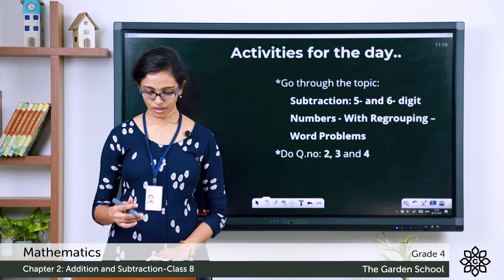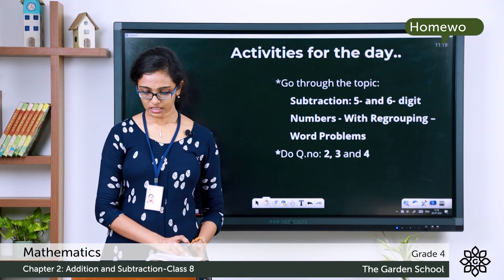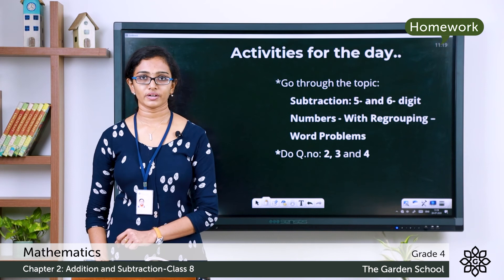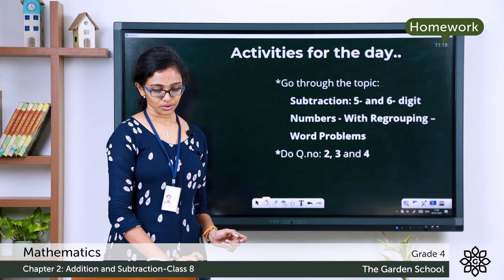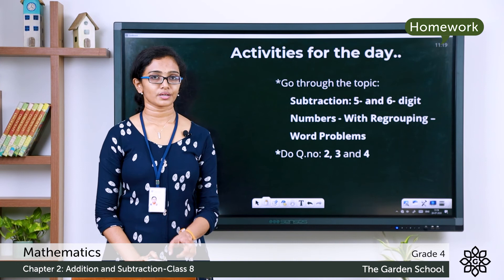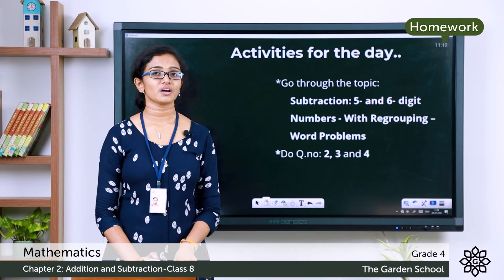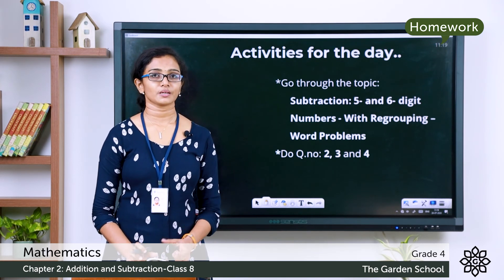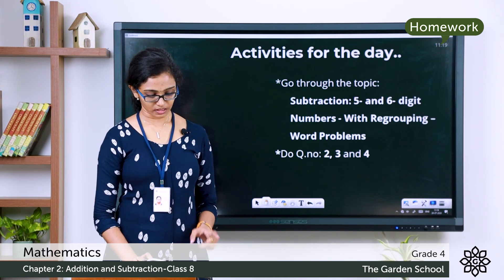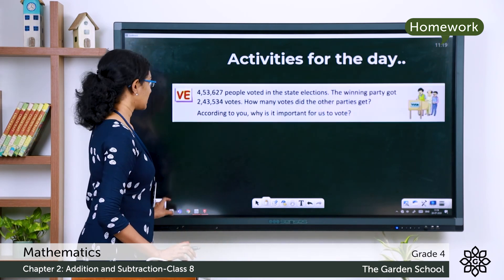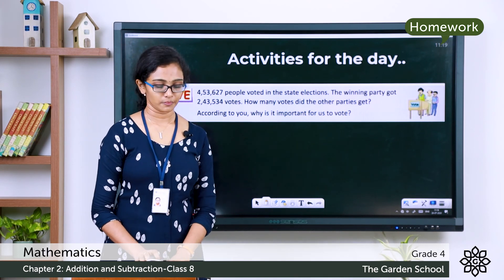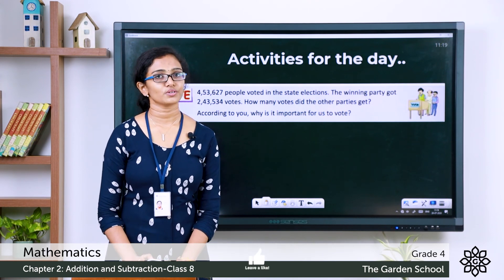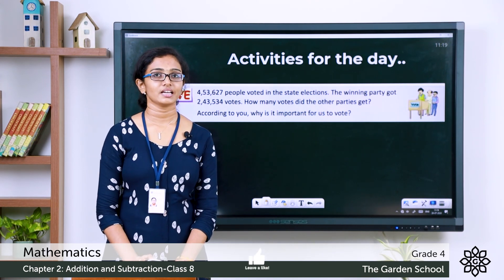I hope this was clear to you. Now, take your textbook and go to the word problems given as examples on the topic of subtraction of 5 and 6 digit numbers. Then go to exercise 2.4, question numbers 2, 3, and 4 — those are word problems. Note down the questions as well as the answers in your notebook, then take a picture and send us. Also, on the same page, page number 28, you can see a question in a purple box — go through that and do accordingly. That's all for today. We will meet in the next class. Bye.